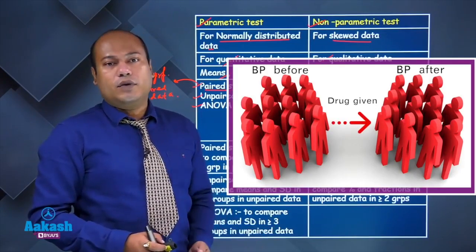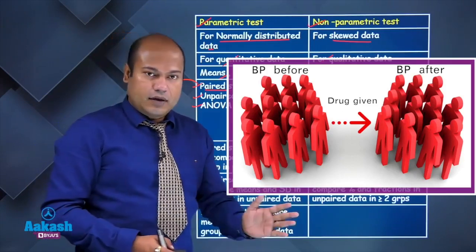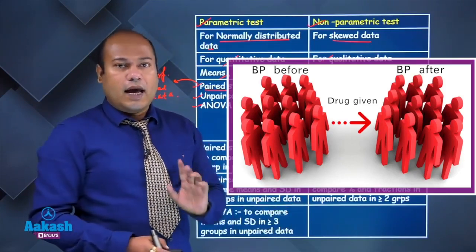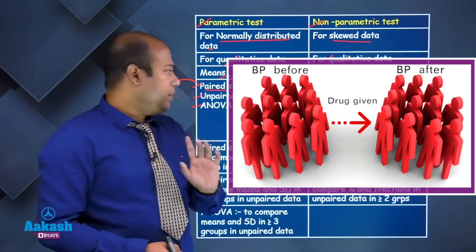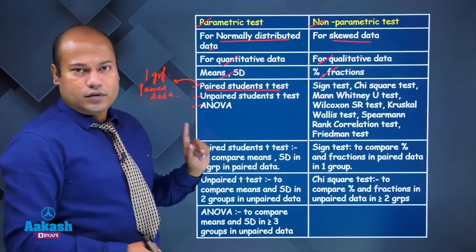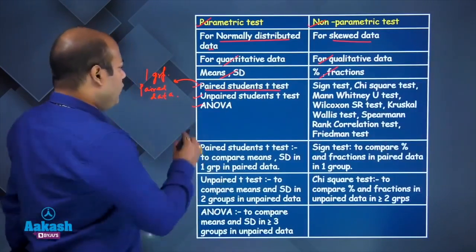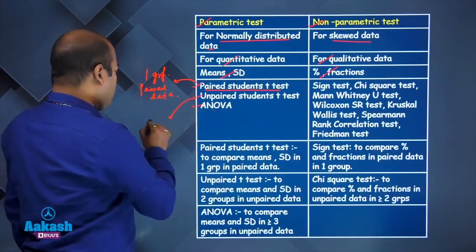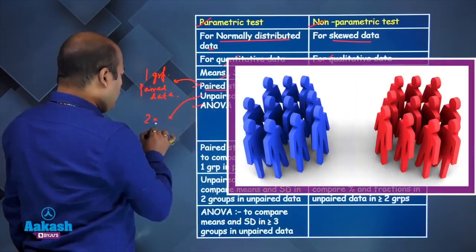That is called paired data — before giving the drug and after giving the drug — with one group of 100 individuals. So that will be the paired student t-test. For the unpaired student t-test, there will be two groups and unpaired data.